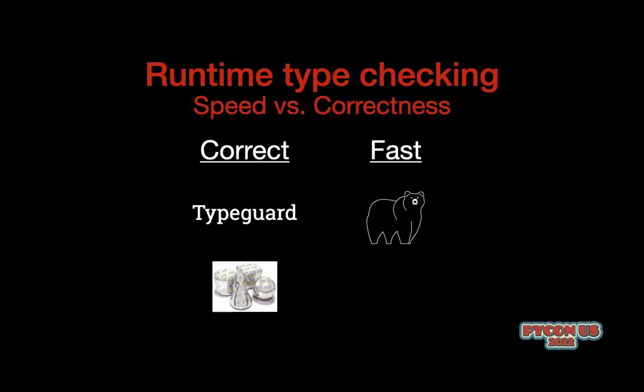It's worth mentioning one big difference between these three libraries: in general, some libraries are just exhaustively checking the type. So if you have something annotated as list of str, it will actually look at the list and go through every element, no matter how long it is, and check that all of the items are str. That is a very correct way to check it, but it's also kind of slow.